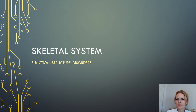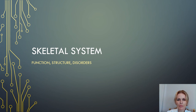The skeletal system's main function is to provide support for the body. For example, the spinal column provides support for the head and torso. The legs, on the other hand, support and bear the weight of the upper body while a person stands. The human skeletal system consists of all bones, cartilage, tendons and ligaments in the body.